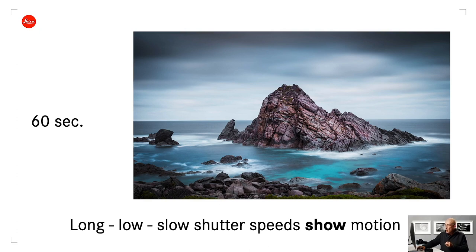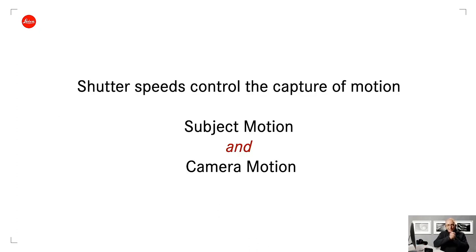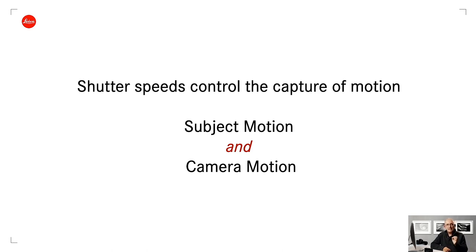A quick summary before moving on: shutter speeds control the capture of motion. But most importantly, if there is no motion of anything whatsoever, the shutter speed is completely and utterly irrelevant to the look of the image. That didn't used to be the case in film days, because long exposures caused problems with film sensitivity, but with digital sensors you can use whatever shutter speed you like — if nothing is moving, it makes no difference at all.